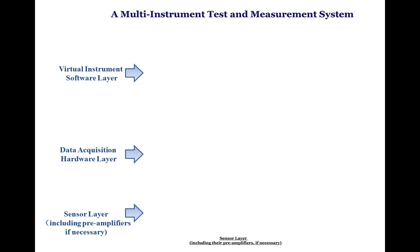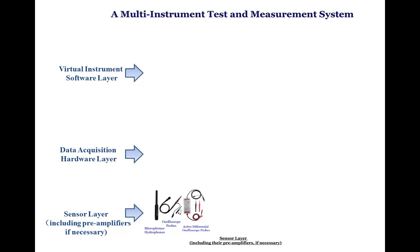The sensor layer is made up of sensors as well as their pre-amplifiers, if necessary. It converts physical quantities to electronic signals, which can then be quantized by the data acquisition hardware layer. It defines the field of application of the system. For example, a microphone can sense sound in air, and a hydrophone can sense sound in water. A passive or active differential oscilloscope probe can be used to measure electronic or electrical voltage signals.